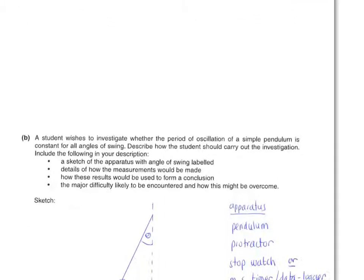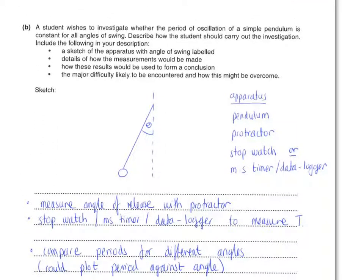The next part of the question relates to an experiment. So we are told that a student wishes to investigate whether the period of oscillation of a simple pendulum is constant for all angles of swing. We are asked to describe how the student would carry out this investigation, and given a number of bullet points of things to include in our answer. Before rushing into your answer, have another look at exactly what's involved in this experiment and what the variables are. So the student wants to investigate whether the time period of the oscillation is affected by the angle of the swing. The student may well be wondering what happens to that grandfather clock as the amplitude of the swings decreases over time, therefore decreasing the angle.